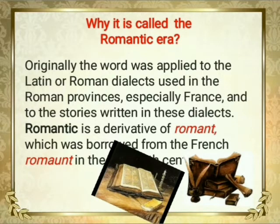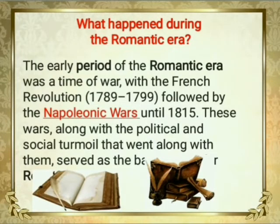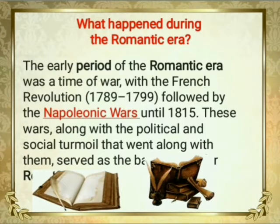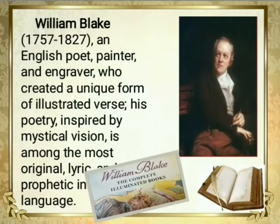What happened during the Romantic era? The early period of the Romantic era was a time of war, with the French Revolution from 1789 to 1799, followed by the Napoleonic Wars until 1815. This political and social turmoil served as a background for Romanticism.